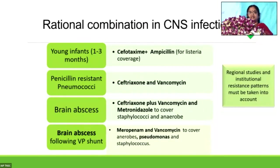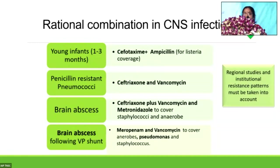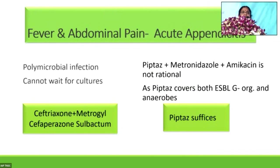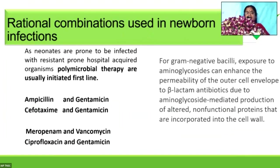For pyogenic meningitis in older children, ceftriaxone plus vancomycin is now given routinely following the VELUR study which showed 40% penicillin-resistant pneumococcus — though regional and institutional resistance patterns must be taken into account. In a child with tetralogy of Fallot developing brain abscess, use ceftriaxone, vancomycin, and metronidazole to cover staphylococcus and anaerobes. In a child with brain abscess following VP shunt, use meropenem plus vancomycin to cover anaerobes, pseudomonas, and staphylococcus. In acute appendicitis with polymicrobial infection, use ceftriaxone plus metronidazole or a single drug like cefoperazone-sulbactam. There is no point giving pip-taz plus metronidazole plus amikacin — pip-taz alone covers everything, including anaerobes.